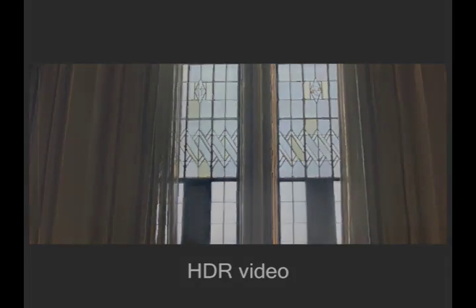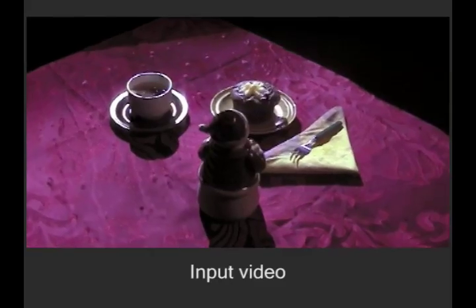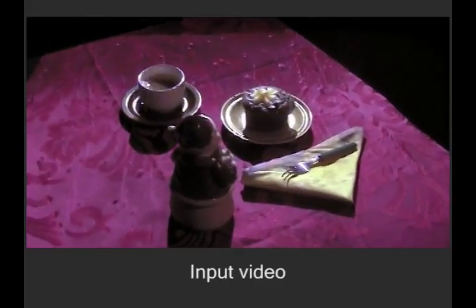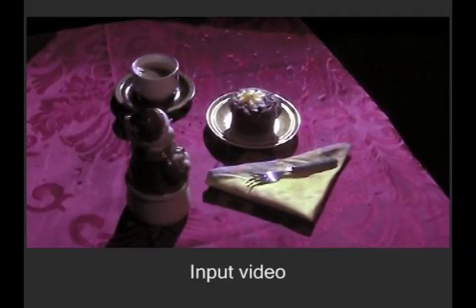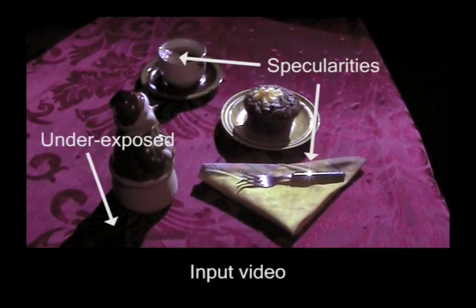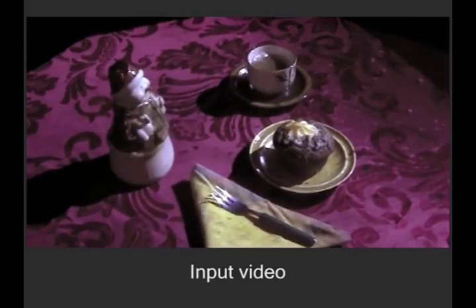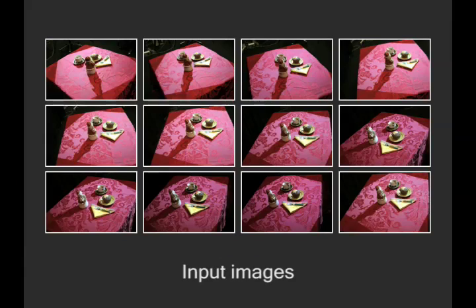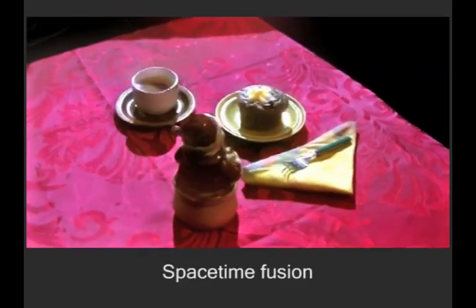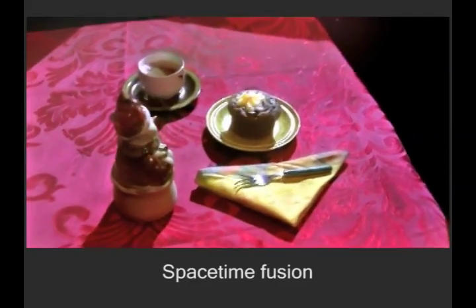In the next example, we demonstrate the ability of our space-time fusion algorithm to transfer dynamic lighting from an input video to a video reconstructed from photographs. Our scene is captured at night on a rainy day. Notice the shadows and caustics from the raindrops cast from a nearby window, and the specularities on the fork. Several photographs of the scene were also taken with long exposure times. Our system produces a well-exposed video while preserving the dynamic lighting of the scene.